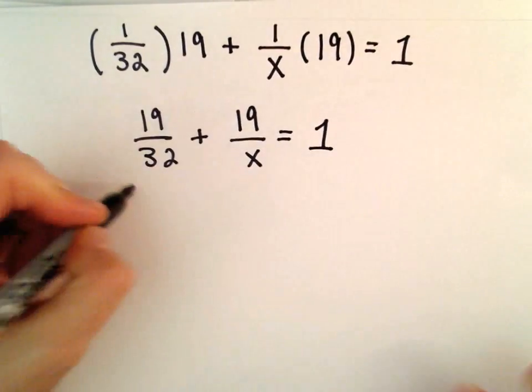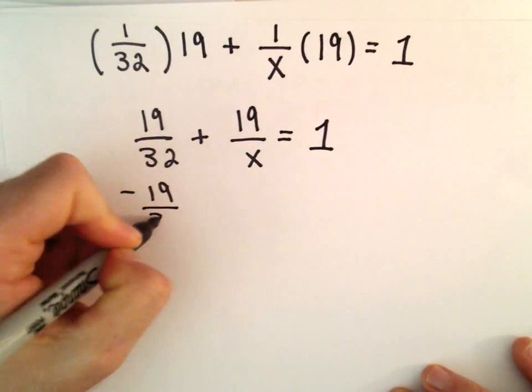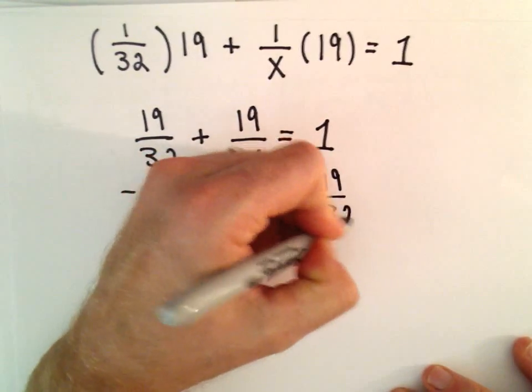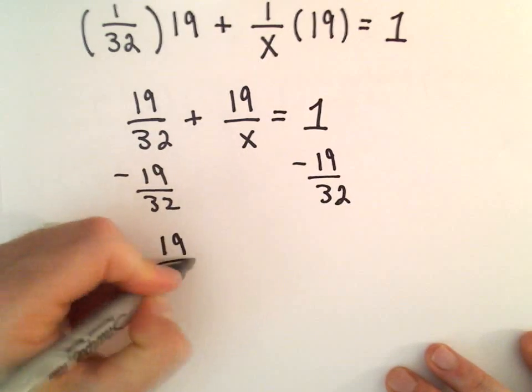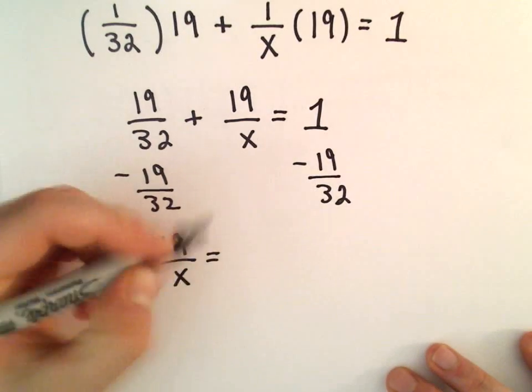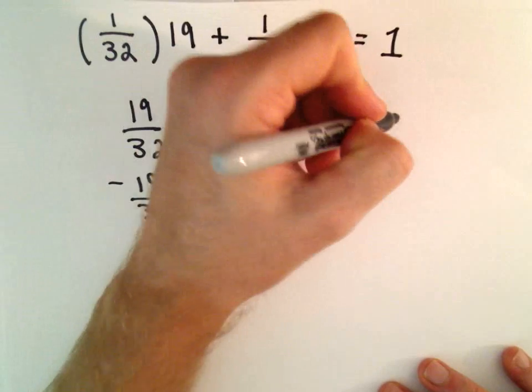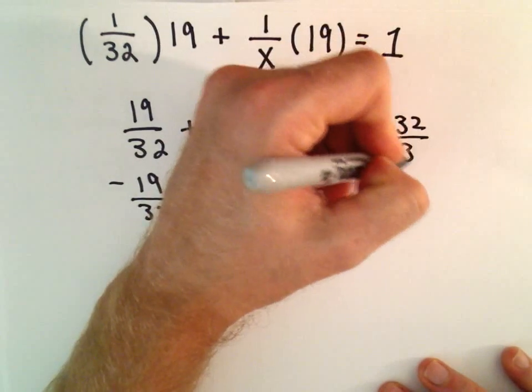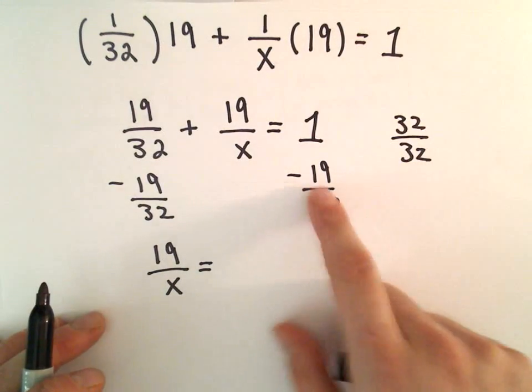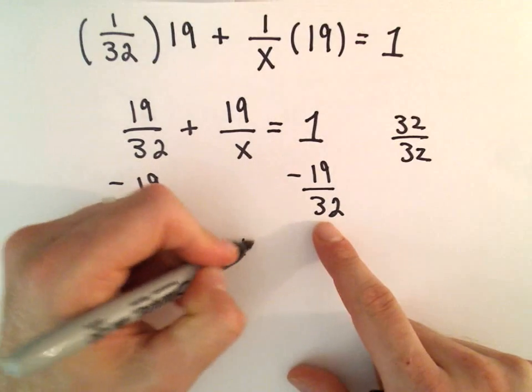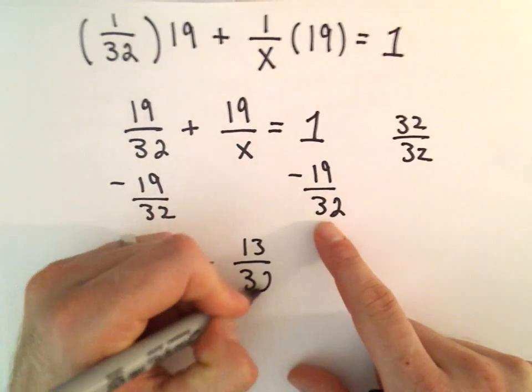So now what I'm going to do is just subtract 19 over 32 from both sides. So we would have 19 over x left on the left. We've got fractions. We can make 1 into 32 over 32. So we've got 32 over 32 minus 19 over 32. That's going to leave us with 13 over 32.